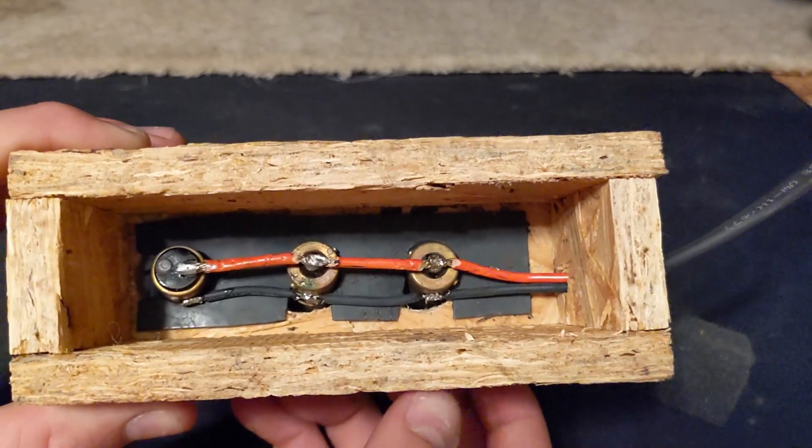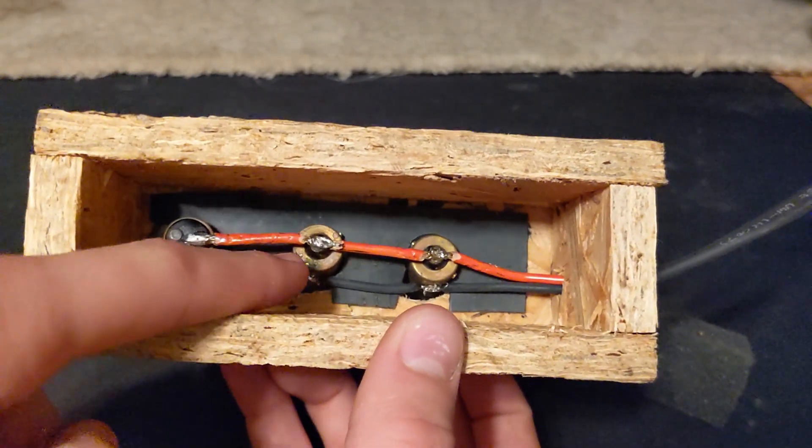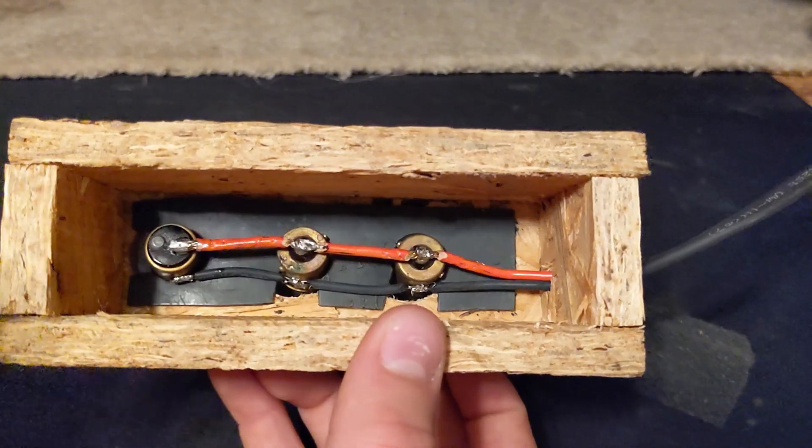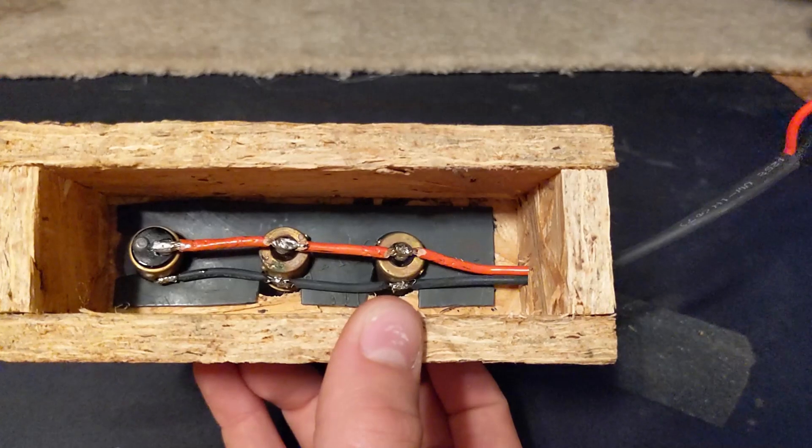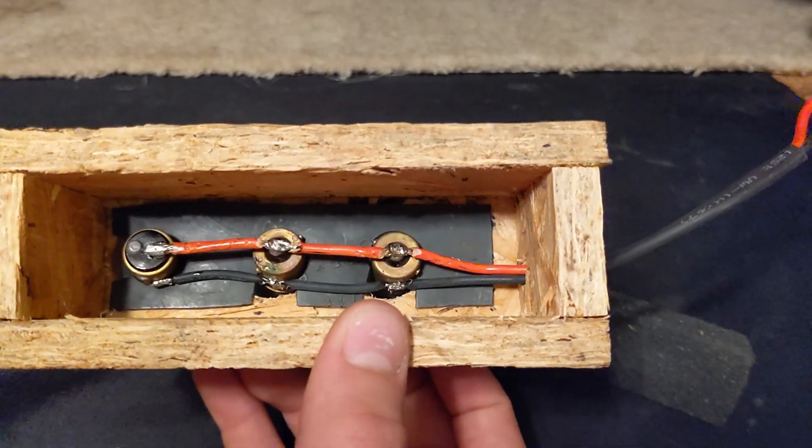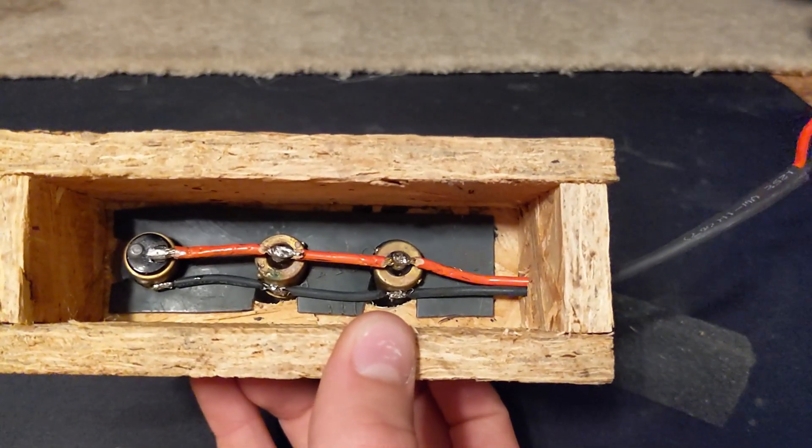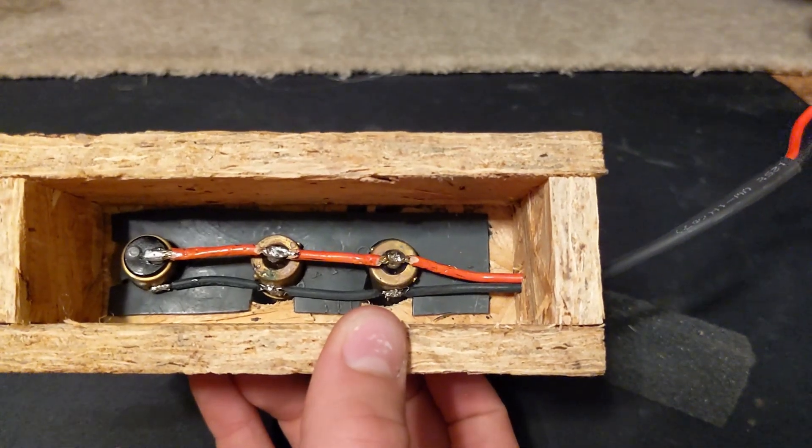There you go. You can see it's a very simple design. I simply have wire soldered onto the bottom of the bulbs. I have the positive going to the tip of the light bulb and then the ground is soldered onto the side.